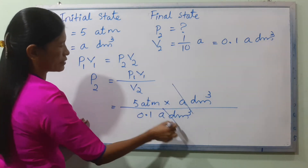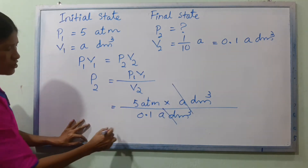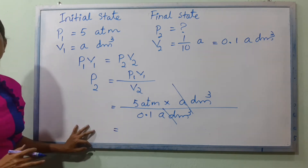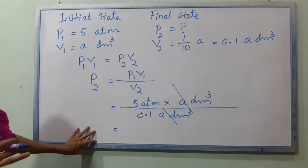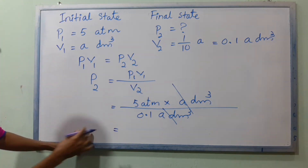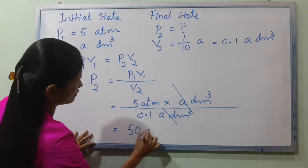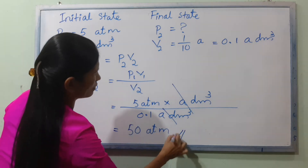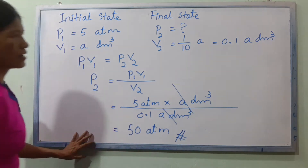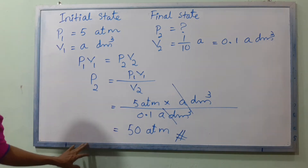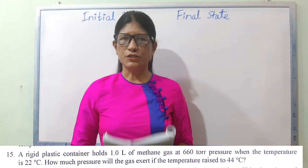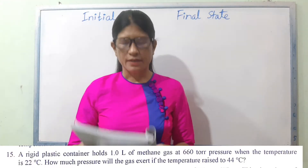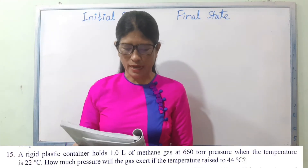5 ATM divided by 0.1 gives us 50 ATM. So P2 = 50 ATM. Number 50.